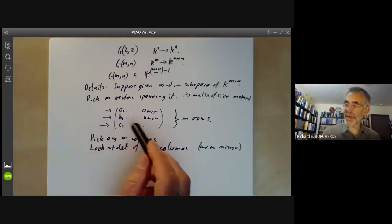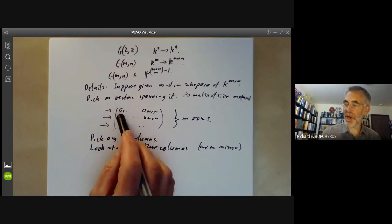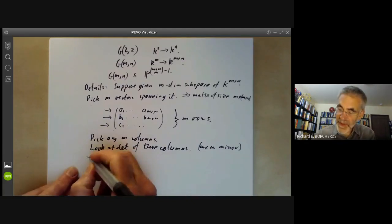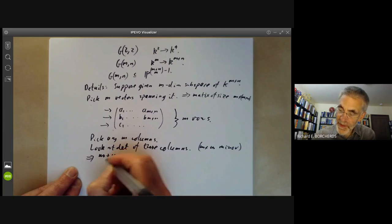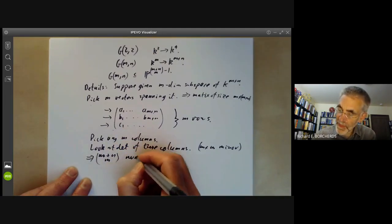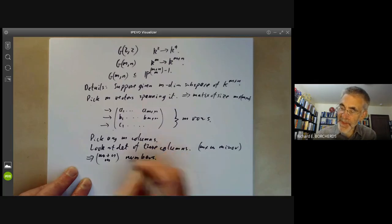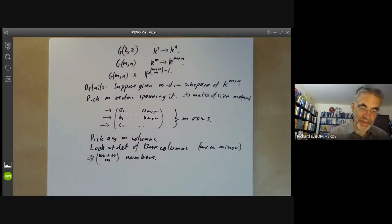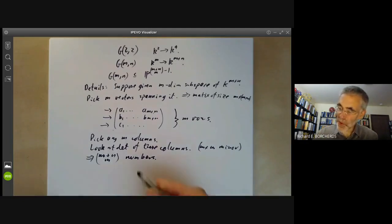So you remember last time for G22, we just did two rows and we just picked two columns and gave the determinant. So this gives us M+N choose M numbers, because this is the number of ways of picking M columns from this.